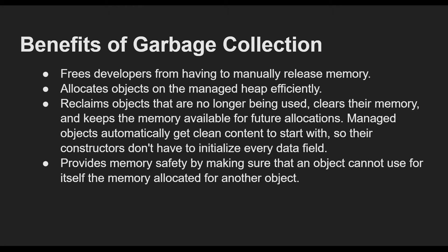So in this case, the garbage collection helps us in efficiently managing the heaps where the reference types are allocated. GC helps in reclaiming the objects that are no longer required in the execution of the code and then clears the memory allocated by them, so that any other object's allocation can be done in the same memory location. GC provides memory safety by making sure that the memory occupied by an object cannot be allocated to any other object while the previous one is still being referenced in the code.